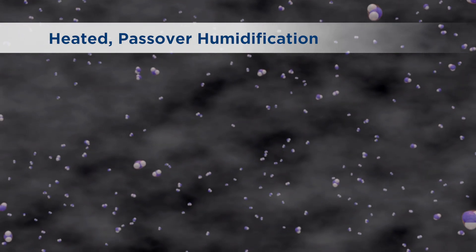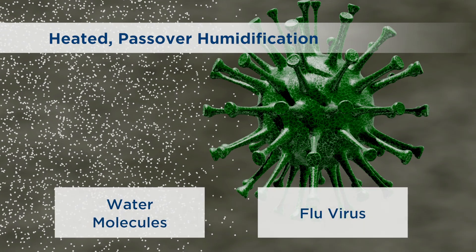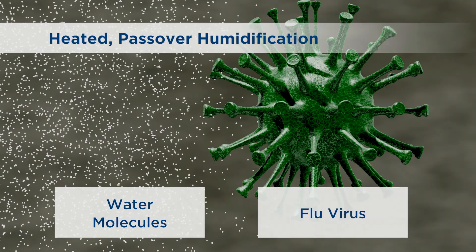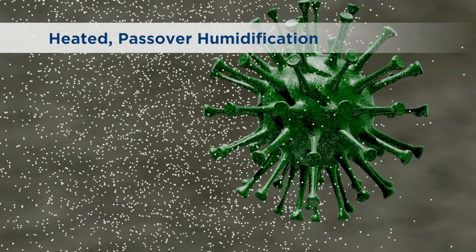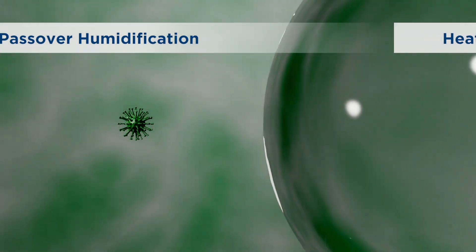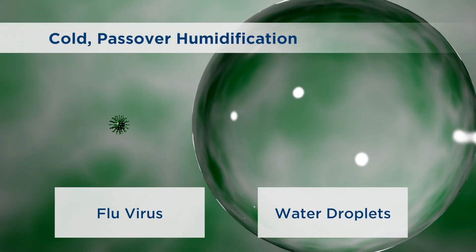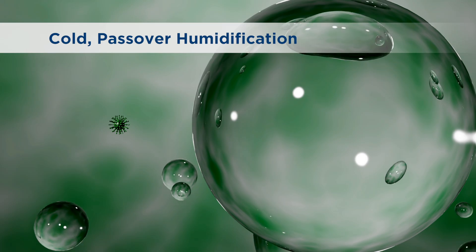Viruses are much larger than water molecules. Here is a flu virus for comparison. Water molecules are so small, in fact, that as a vapour, they cannot transport bacteria or viruses. In comparison to water vapour, water droplets are many times larger than viruses or bacteria. The same flu virus is tiny when compared with a water droplet, which means water droplets can easily carry a variety of bacteria and viruses along with the respiratory gas.